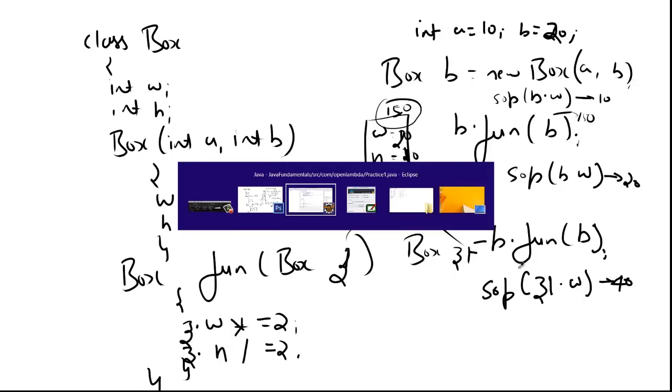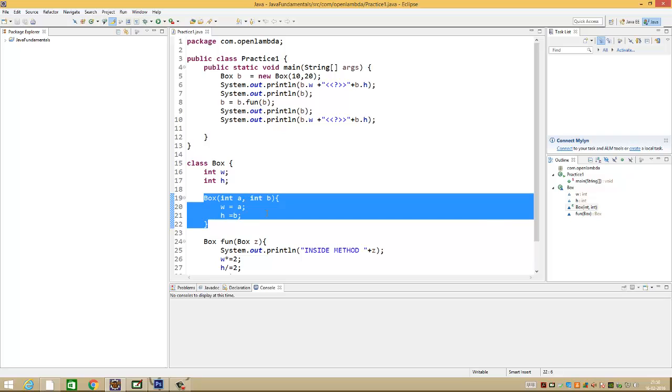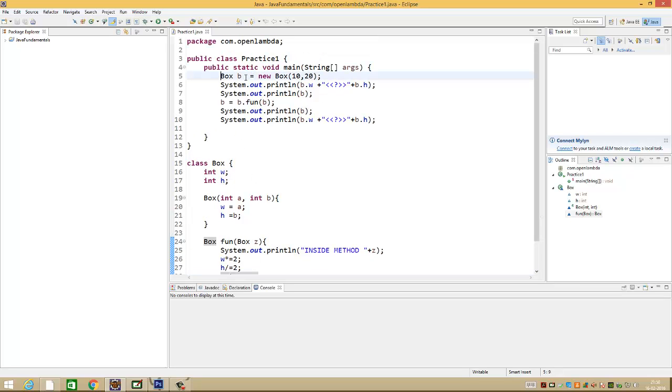We will see how to work with this program. Just observe here. What I have done is basically the same program which has two instance variables, one constructor, one method. Inside this I am printing the address, doing some operation, returning the same value what I have passed for the particular method. Printing this.